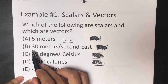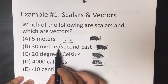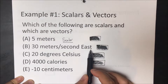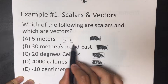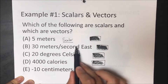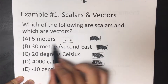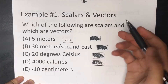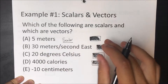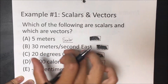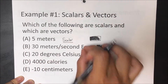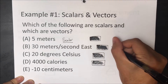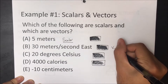B says 30 meters per second east. So we see a quantity here — 30 meters per second — and east, a direction. So if it has both a quantity and a direction, then we know that this is a vector.